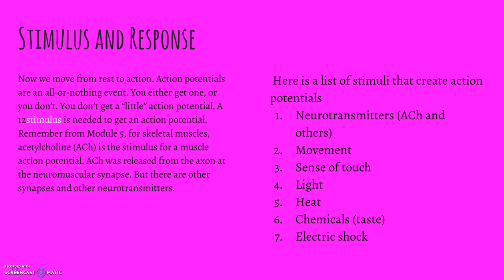Now we're going to move from rest to action. Action potentials are an all-or-nothing event—you either get one or you don't; you don't get a little action potential. A stimulus is needed to get an action potential. If you remember from Module 5 for skeletal muscles, it was acetylcholine that was the stimulus for the muscle action potential. ACH was released from the axon in the neuromuscular synapse, but there are other synapses in the body and they have other neurotransmitters. Here's a partial list of stimuli that create action potentials: neurotransmitters like ACH and others, movement, your sense of touch, light, heat, chemicals, and electric shock.